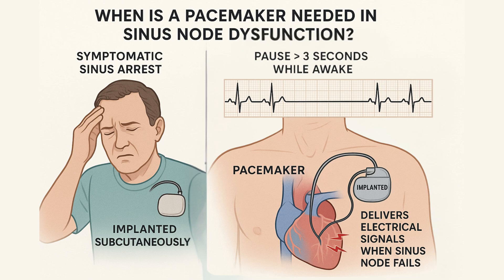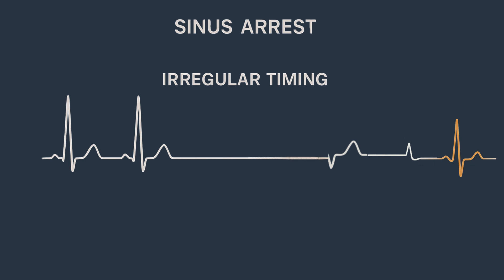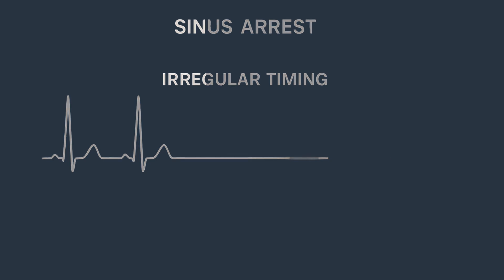A pacemaker is a small device implanted under the skin, usually near the collarbone. It sends out electrical impulses to keep the heart beating when the sinus node fails. Let us revisit the ECG we saw at the beginning — the flatline was a sinus arrest. There was no sinus node activity, but after five seconds, a junctional escape rhythm took over. The heart restarted. Now imagine if that escape rhythm had not arrived in time — that patient might have lost consciousness. Worse, they might not have recovered. That is the danger and the importance of recognizing sinus node dysfunction.